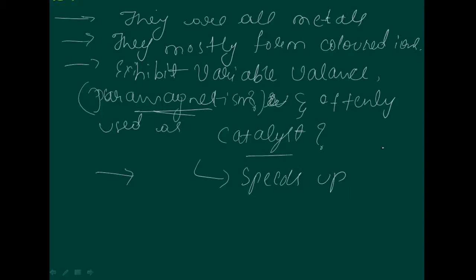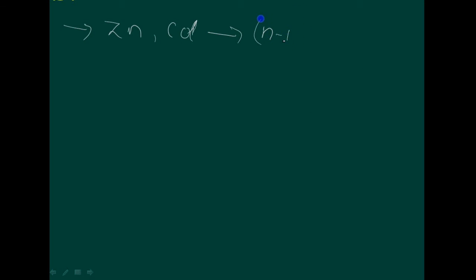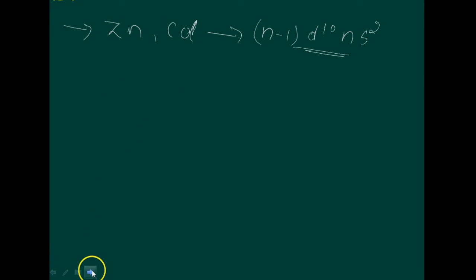However, zinc, cadmium, and mercury, which have the electronic configuration (n-1)d¹⁰ ns², don't show most of the properties of transition elements. In a way, transition metals form a bridge between the chemically active metals of s-block elements and the less active elements of groups 13 and 14, and thus take their name — transition elements.